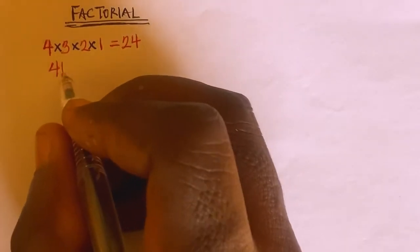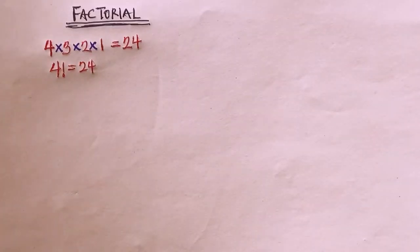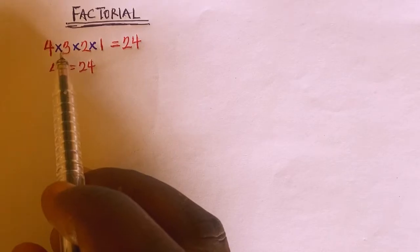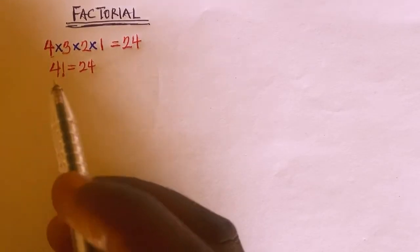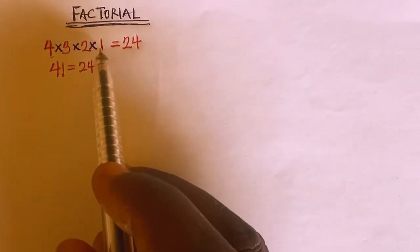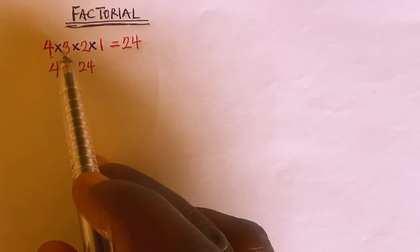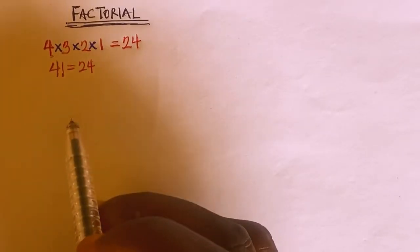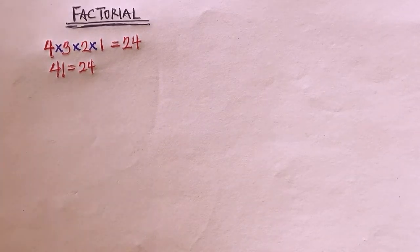So, in this case, 4 factorial is equal to 24. What it means is that a factorial is the product of all numbers that are below or equal to the integer itself. In a simple form, you can just say a factorial is a function that multiplies a number by every number below it, down to 1.